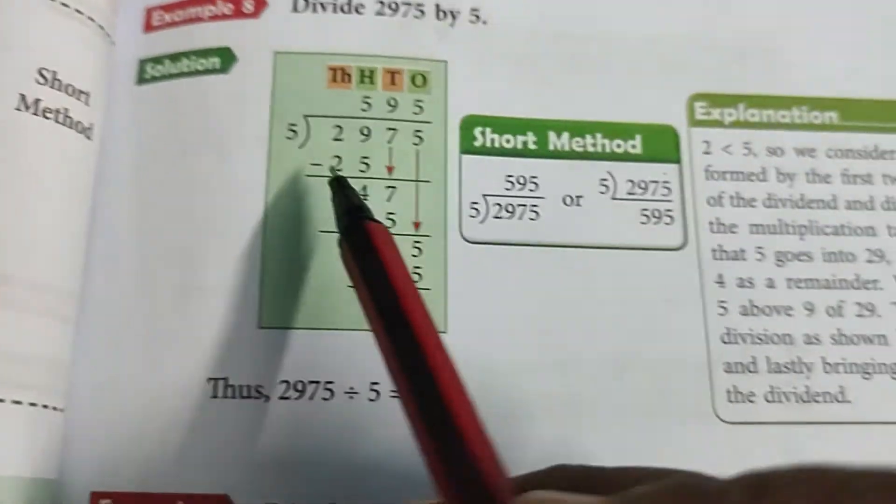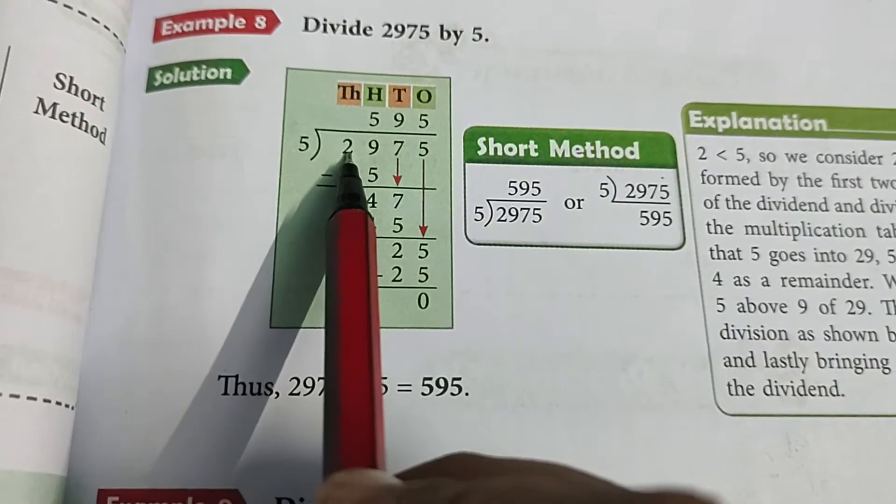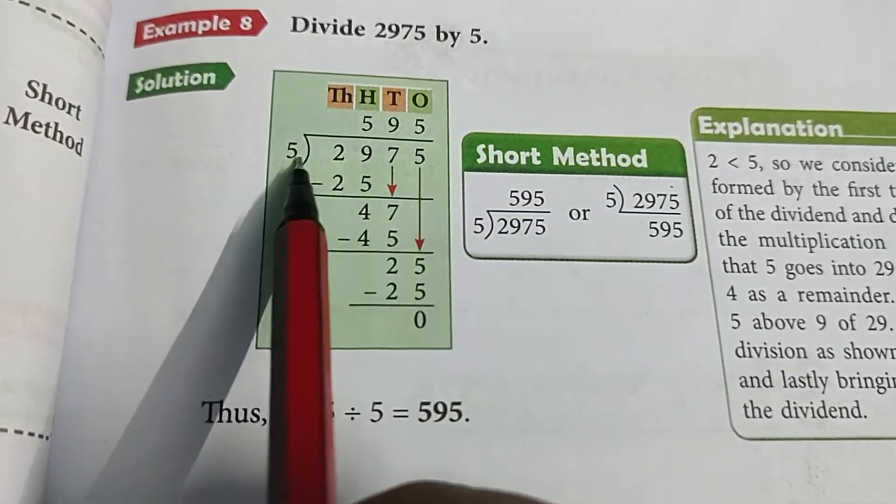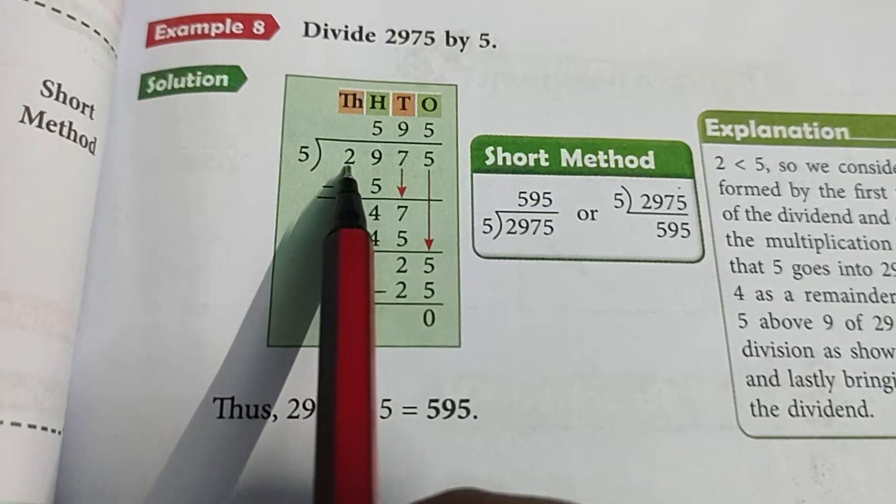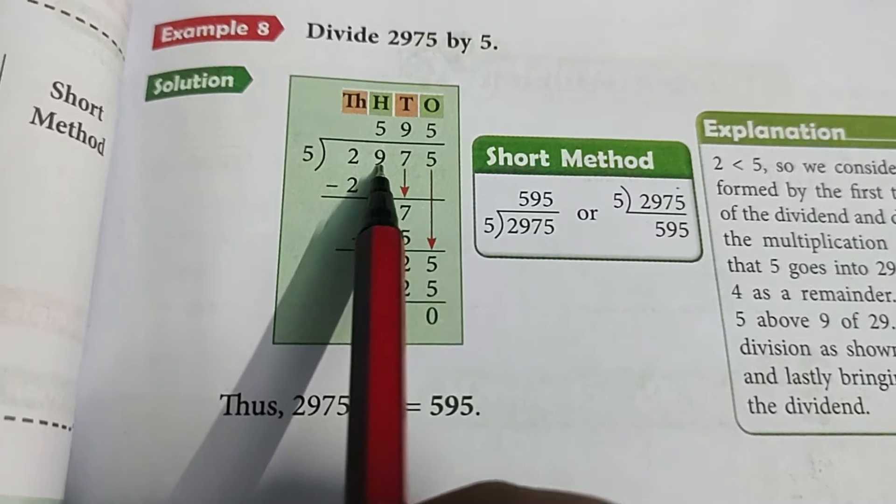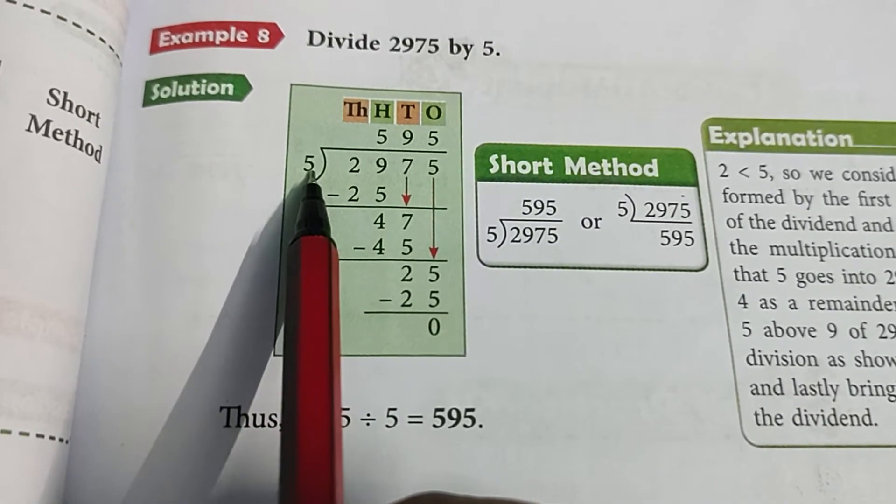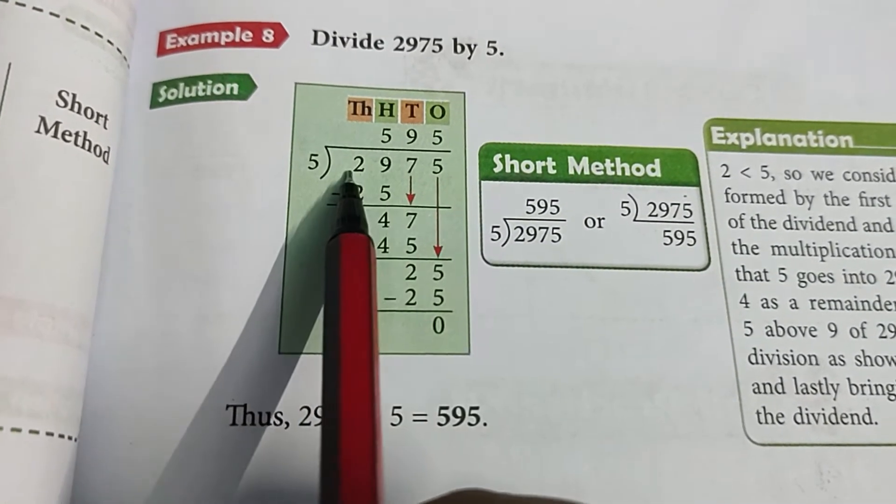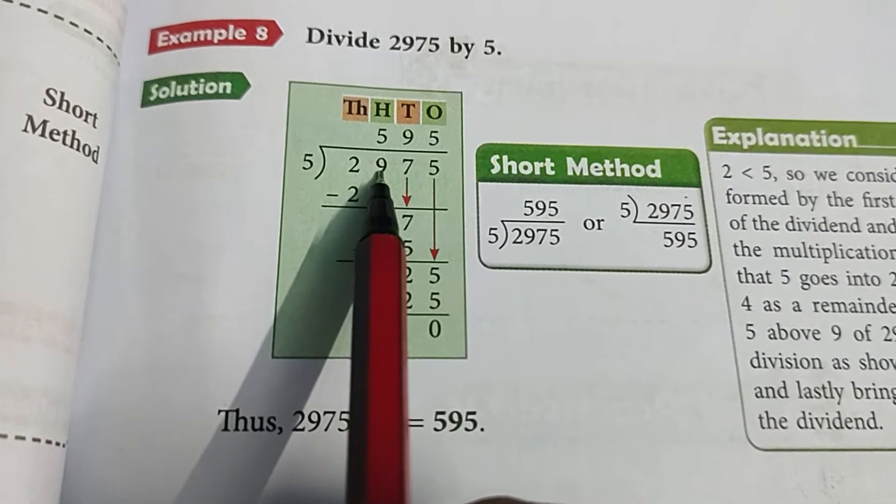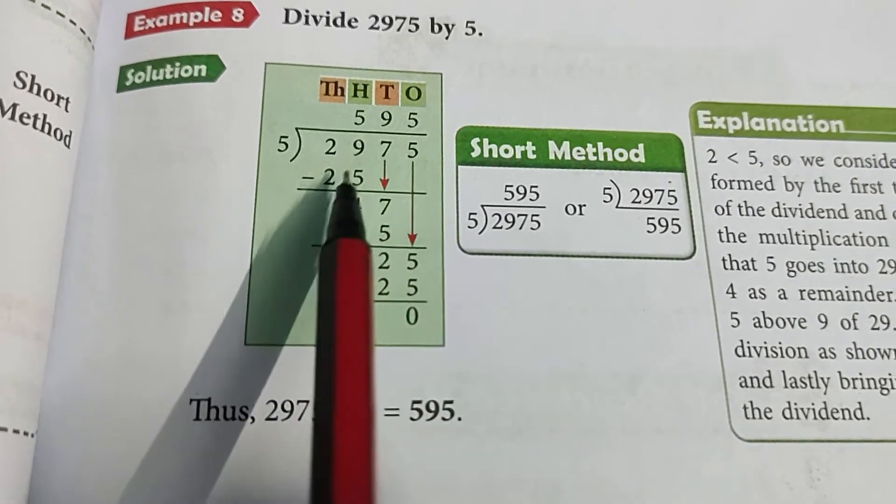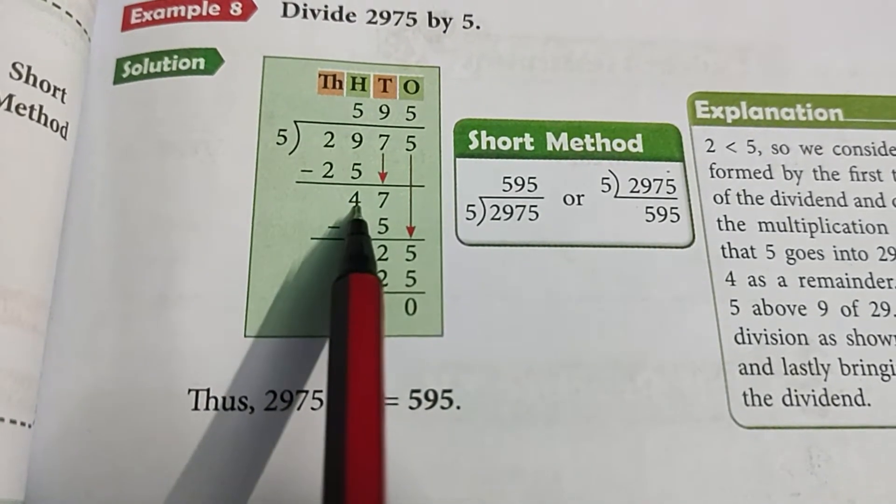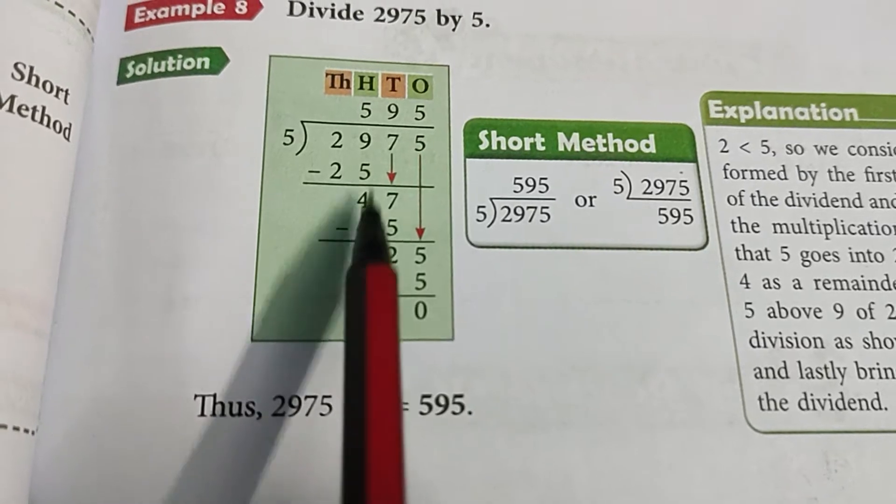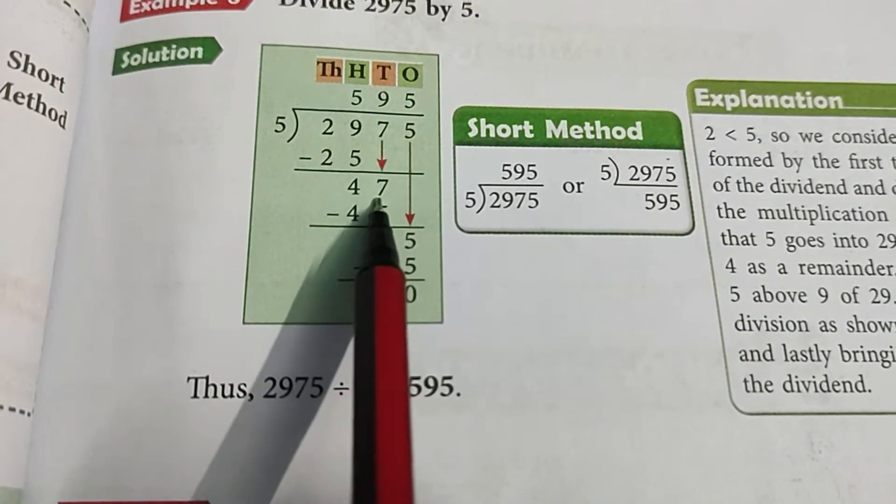Let's see the examples. Here we have 2975 divided by 5. So first two digits, we will take 2, small 5, so we will take 29 and divide by 5. We will take 9 or less number, so 5×5 is 25. 29 minus 25, we will get 4.